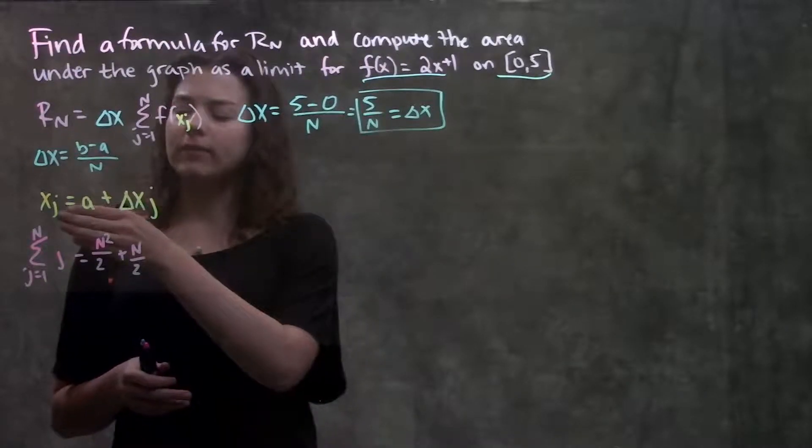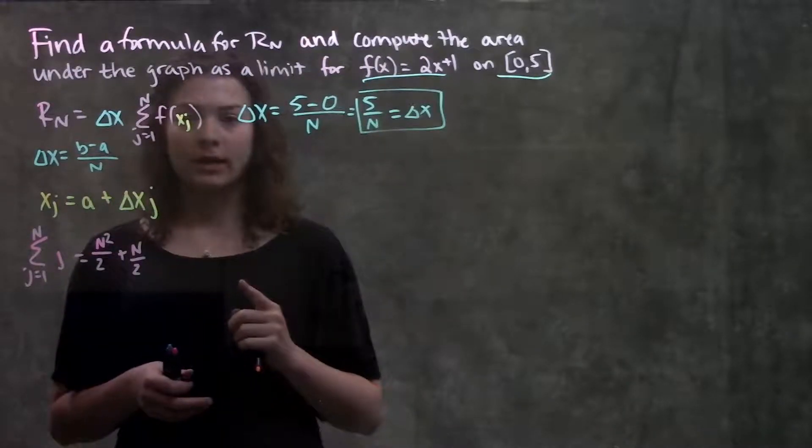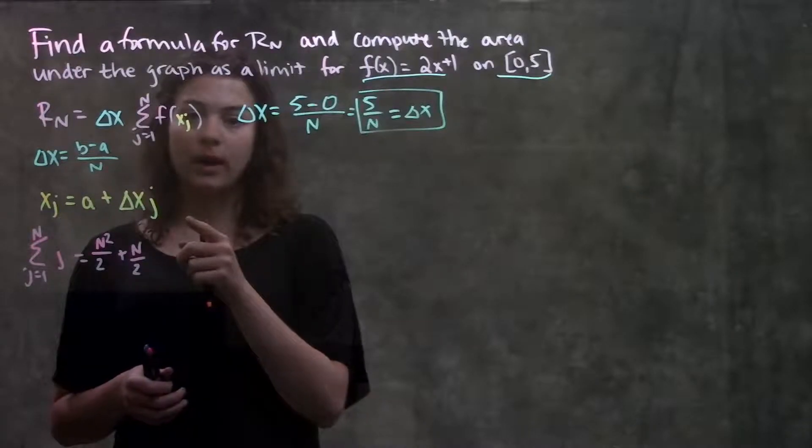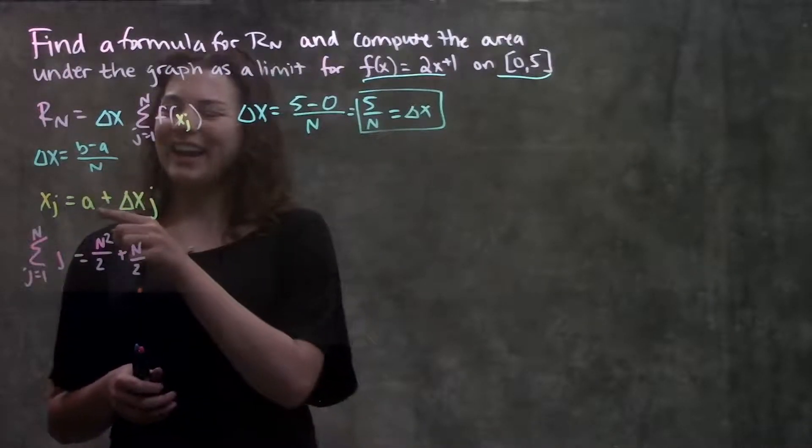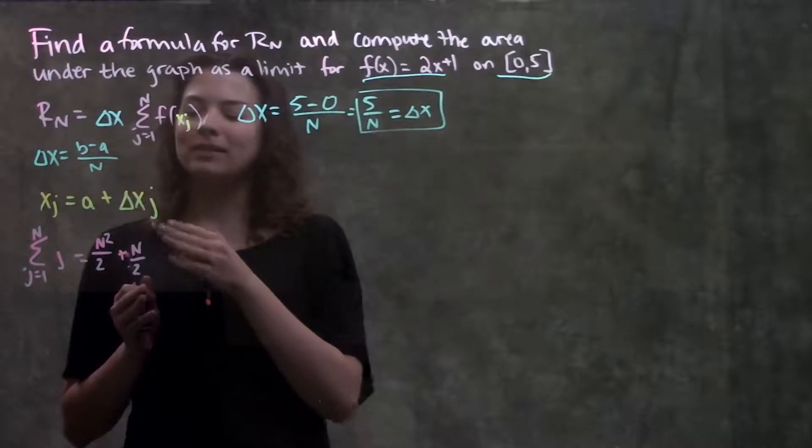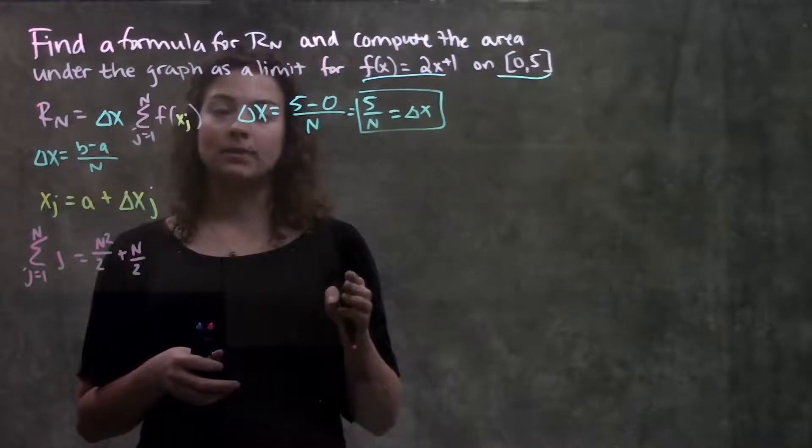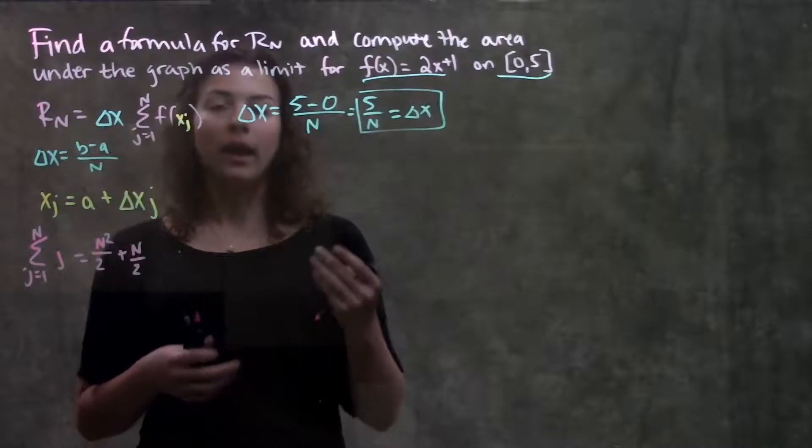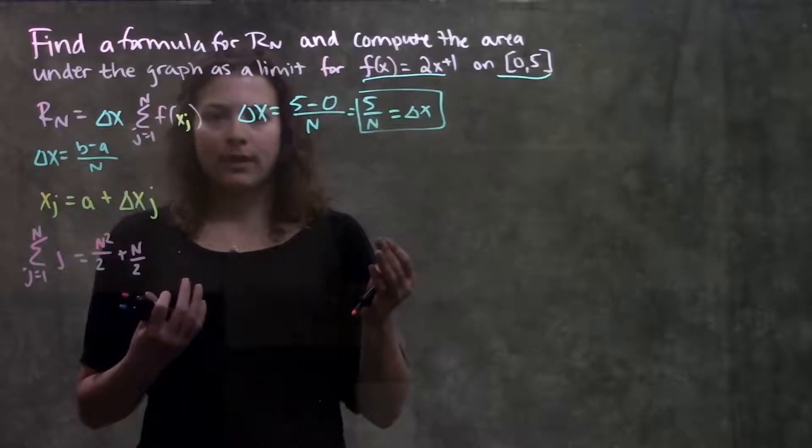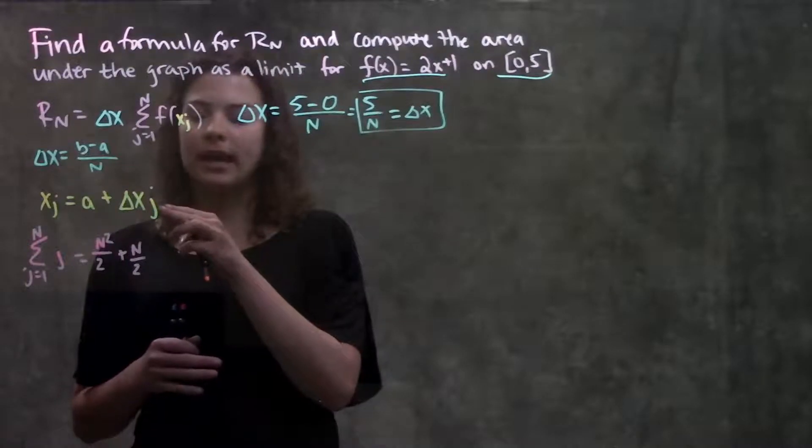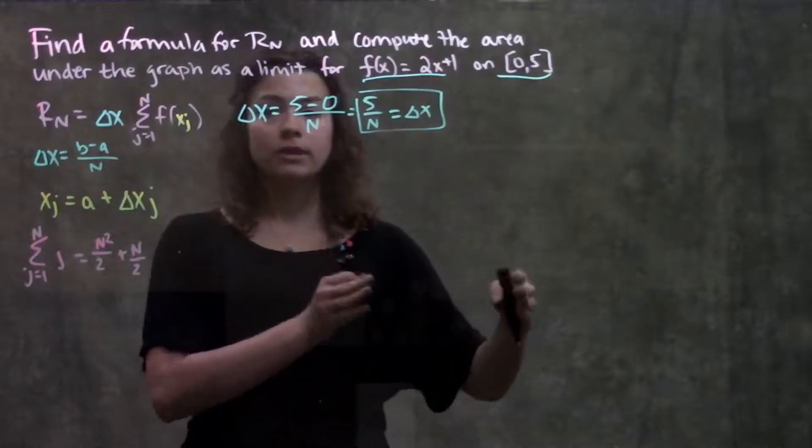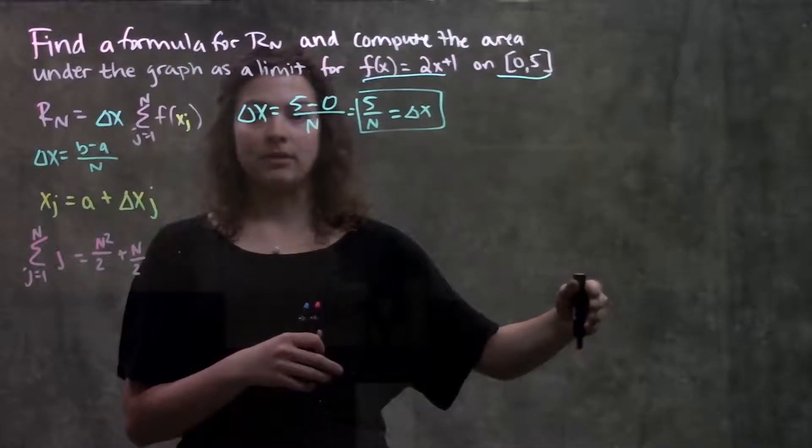So, if I'm trying to find what the x value is for my first rectangle, I plug j in for 1, or I plug 1 in for j, and I get my starting value plus 1 times delta x plus 1 width over, that'll be my x value for my first rectangle. And similarly, if I'm looking for my fourth rectangle, I plug in 4 for j, and that'll tell me to move over 4 times, and that'll be my x value for that rectangle.